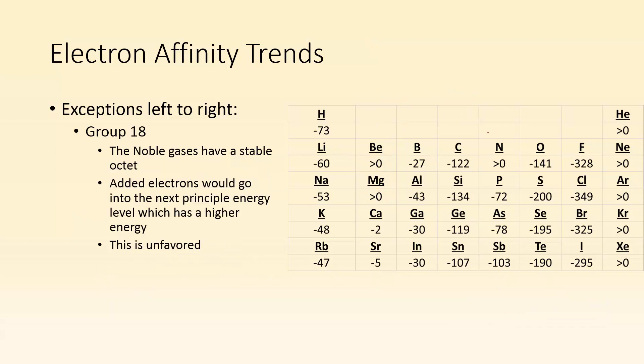Another exception would be group 18. Group 18, the noble gases, if you take a look, all of the electron affinities for those is greater than zero. The reason for that is the added electrons would have to go into the next principal energy level, which is a higher energy. If you want those things to gain an electron, you're going to have to force it. You're going to have to provide energy for that to happen.